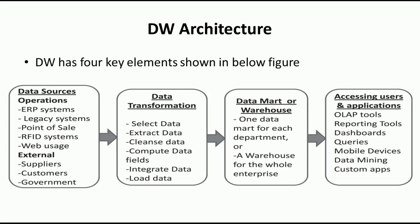There are four key elements of data warehouse architecture. It starts with data sources, next is data transformation, then we need to think whether we need to design a data warehouse or a data mart, and finally we need to design something called data warehouse access, where users can access data from the data warehouse for their analysis purposes.